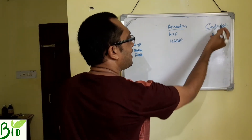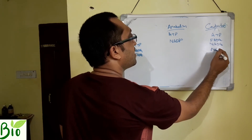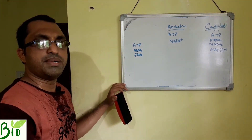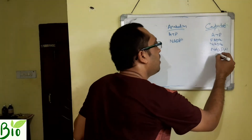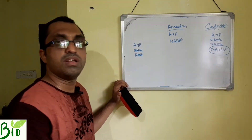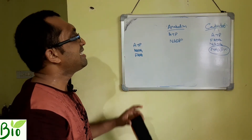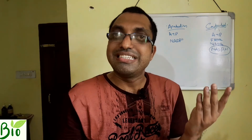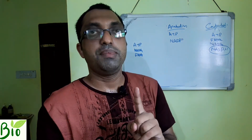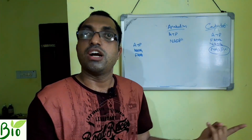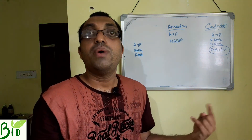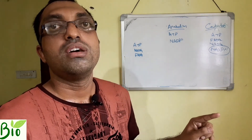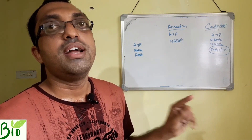Don't think that in catabolism, NADPH is not produced. NADPH is produced but in a very low amount, selectively in some reactions. In photosynthesis, you require NADPH. In fatty acid biosynthesis, you also require NADPH. So NADPH cannot convert to ATP, but NADPH can function like ATP.